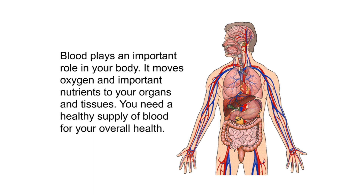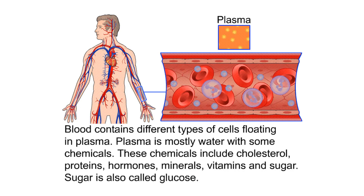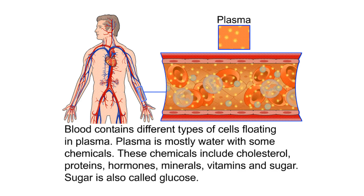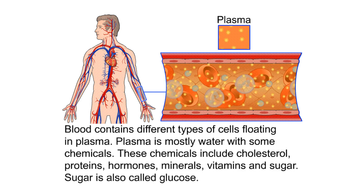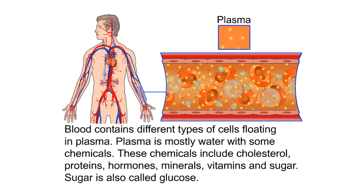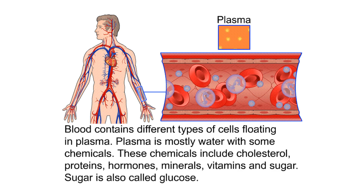Blood plays an important role in your body. It moves oxygen and important nutrients to your organs and tissues. You need a healthy supply of blood for your overall health. Blood contains different types of cells floating in plasma. Plasma is mostly water with some chemicals, including cholesterol, proteins, hormones, minerals, vitamins, and sugar — also called glucose.